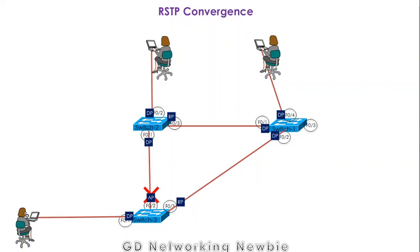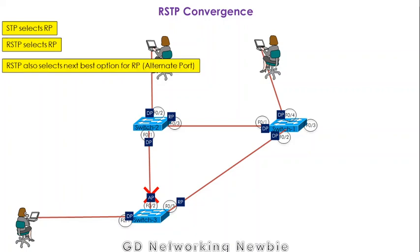Let's discuss a simple scenario for RSTP convergence. RSTP selects root ports exactly the same way as STP. RSTP also selects the next best option for the root port, which is the alternate port as we discussed. This alternate port characteristic is specific to RSTP — there is no alternate port in STP.